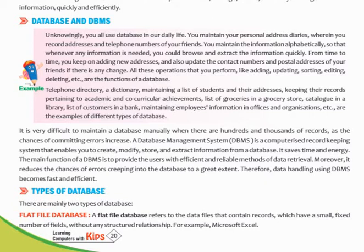There are two kinds of databases available in the market. The first is flat file database — it is a model of database in which data is stored. So the first type of database is flat file database. Flat file databases are those databases in which data is stored in the form of files. These files are very small and can hold a fixed number of records without any structure.